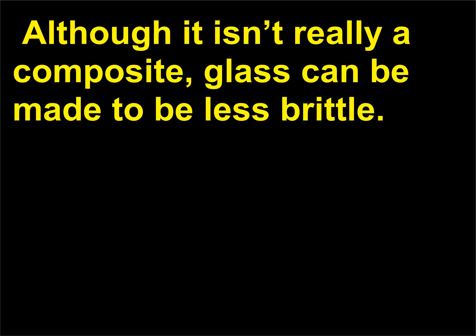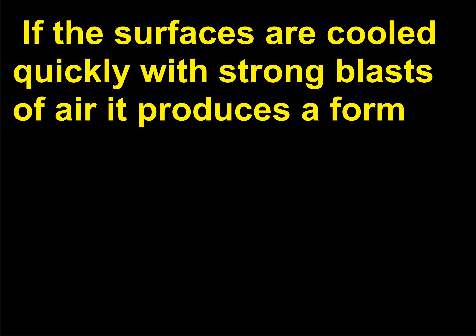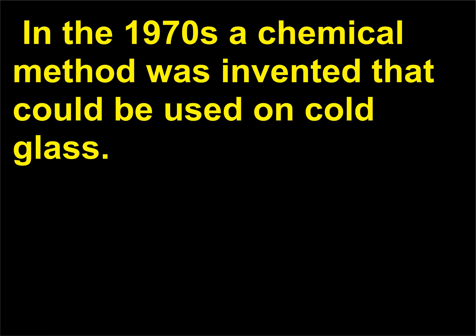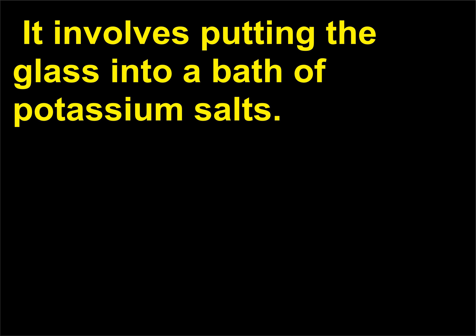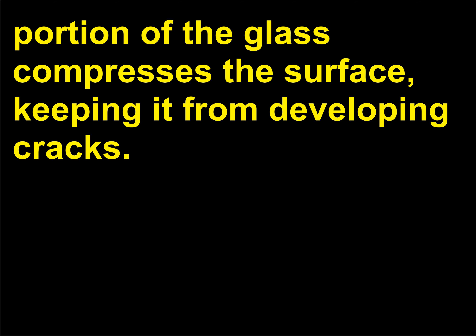Although it isn't really a composite, glass can be made to be less brittle. The key idea is to keep the surface under compression at all times so it won't crack. Glass sheets are made from the fluid state by cooling. If the surfaces are cooled quickly with strong blasts of air, it produces a form of glass called case-hardened, used for shatterproof lenses in eyeglasses. In the 1970s a chemical method was invented for cold glass: putting the glass into a bath of potassium salts. The potassium replaces sodium in the surface layers; the larger potassium atoms expand the surface layers so that the interior portion of the glass compresses the surface, keeping it from developing cracks.